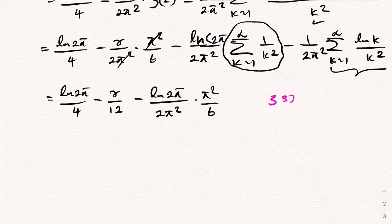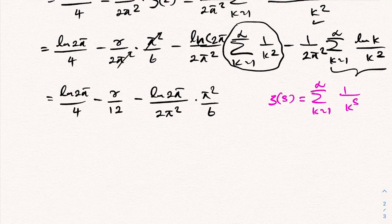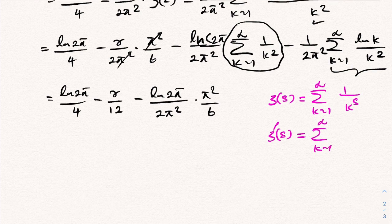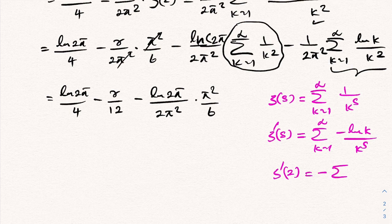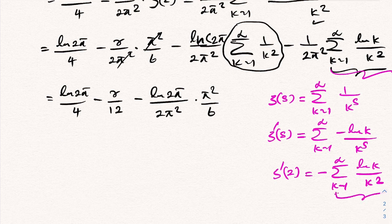Recall that the Riemann zeta function is ζ(s) = Σ(k=1 to ∞) 1/kˢ. Differentiating with respect to s gives ζ'(s) = −Σ(k=1 to ∞) ln(k)/kˢ. Therefore at s=2: ζ'(2) = −Σ(ln(k)/k²), so Σ(ln(k)/k²) = −ζ'(2), and our expression becomes plus 1/(2π²)·ζ'(2).